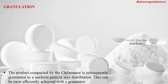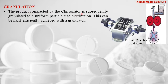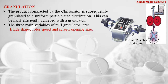The product compacted by the Chilsonator is subsequently granulated via a mill granulator to form a uniform particle size distribution. The three main variables of the mill granulator are blade shape, rotor speed, and screen opening size.